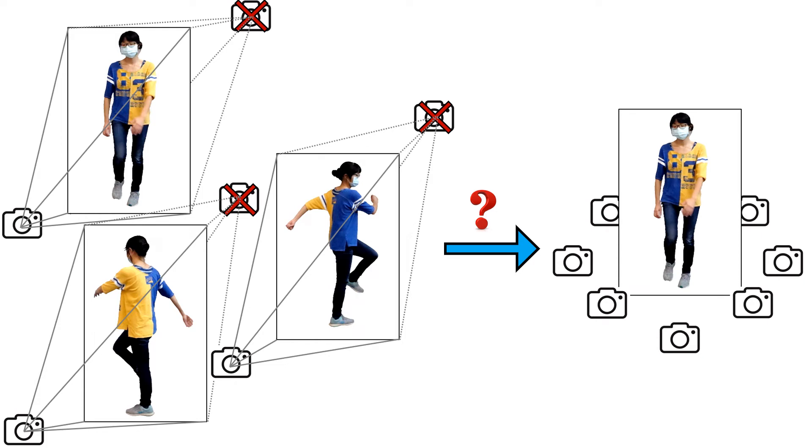Our key insight is, since the person is moving, the unobserved body regions in one frame may be visible in other frames, which can be very useful.